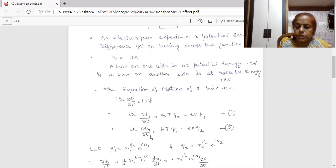Now, since the pair on one side is at potential energy EV minus EV. So, I am writing my wave function to be ψ₁. Similar expression is for second junction. The pair on another side is at potential energy plus EV. So, for this second junction, I have expression iℏ dψ₂/dt = ℏT ψ₁ + EV ψ₂.